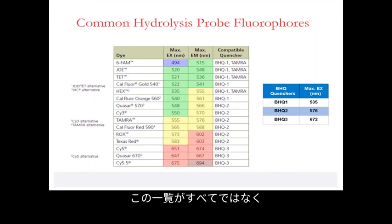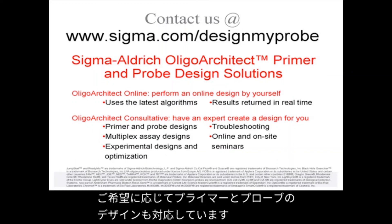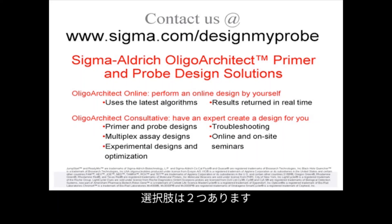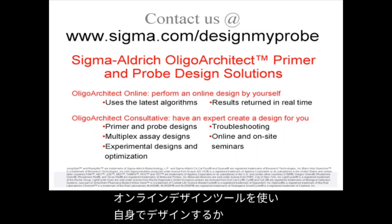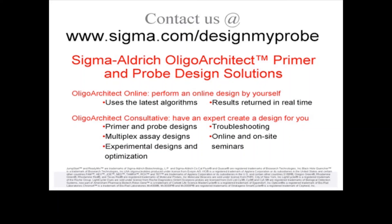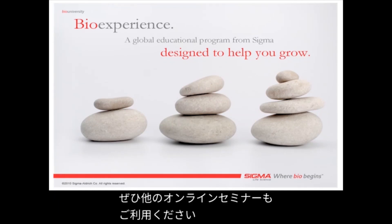If you need help with your primer and probe design, we are always happy to assist. You can contact us online at www.sigma.com/designmyprobe. There you'll find two options: an online design interface where you can perform the design yourself, and experts you can call for a consultative collaboration on primer and probe design. That concludes this presentation. We thank you for your time and hope you will take advantage of the other online seminars and presentations that Sigma has to offer.